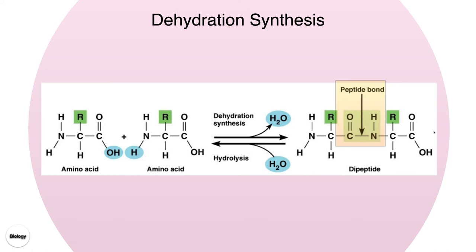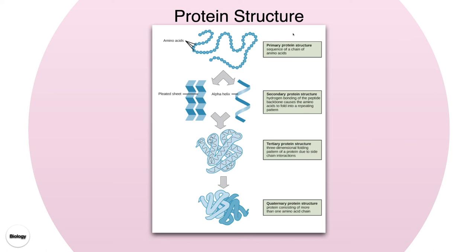This process occurs in a structure called a ribosome, one of the cellular organelles we'll discuss in a future unit. As we build this strand of amino acids, we produce the primary structure of our protein. At the top, the primary structure is simply all the amino acids put together — each blue circle representing an amino acid, and the lines between them representing the covalent or peptide bonds formed.